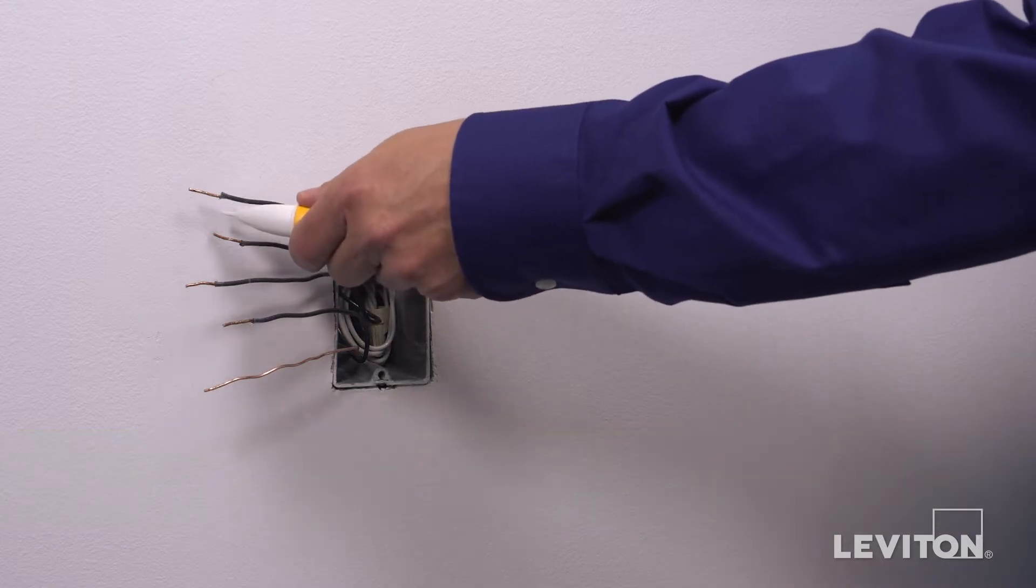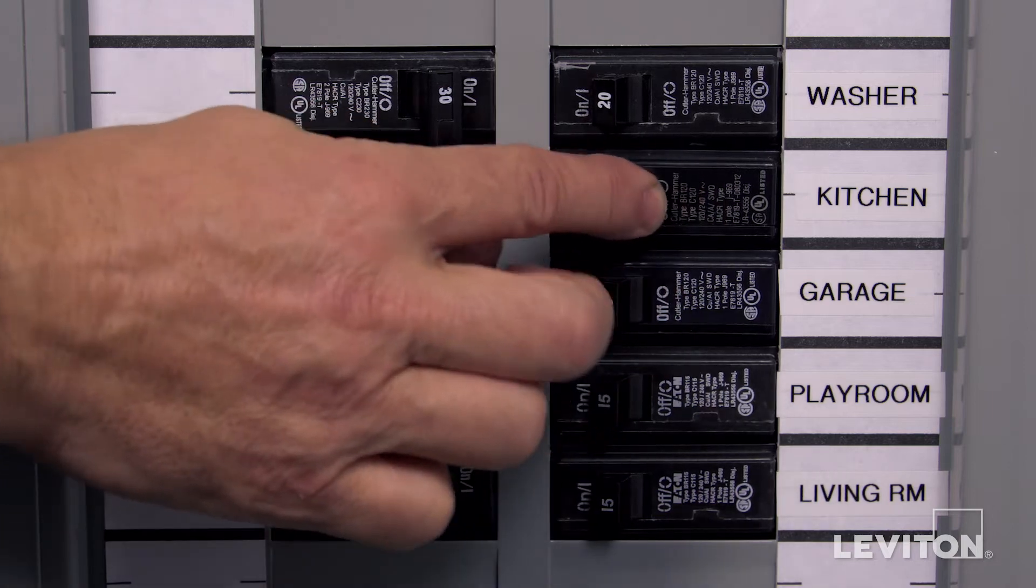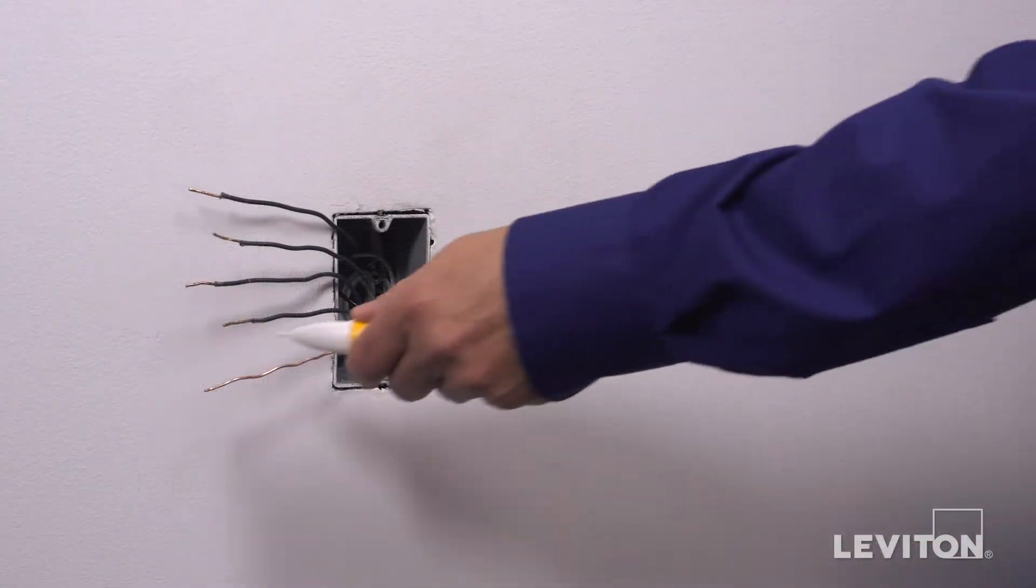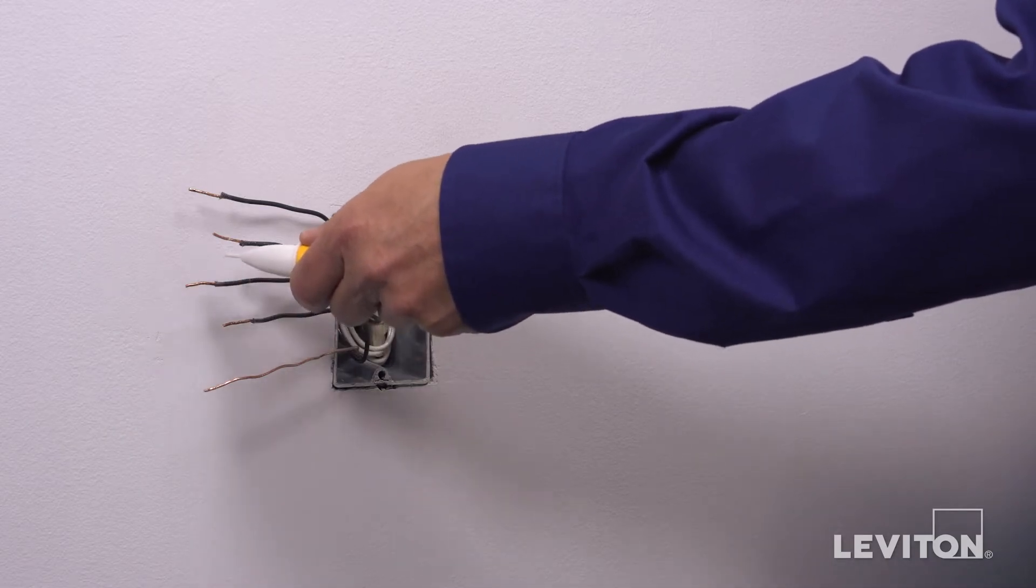Now, we need to identify the hot wire. To do this, turn the circuit breaker back on. Carefully use the voltage tester to test each wire. The hot wire will be indicated by the tester.